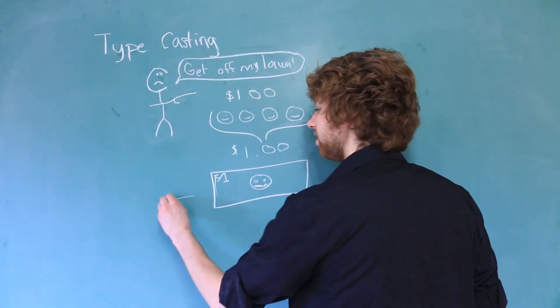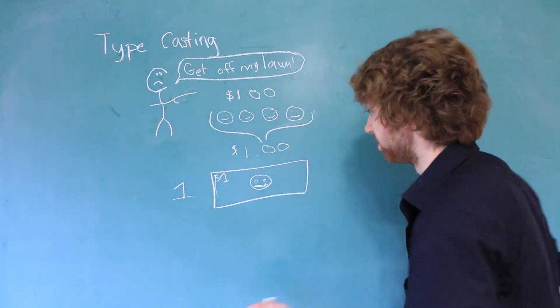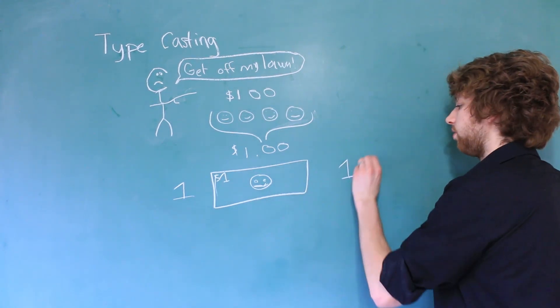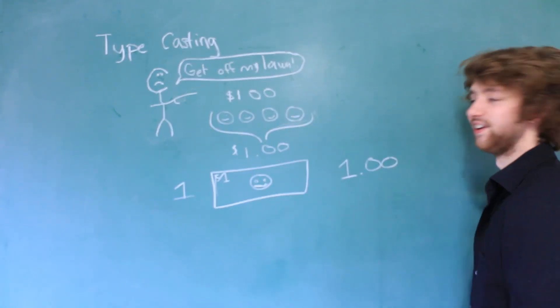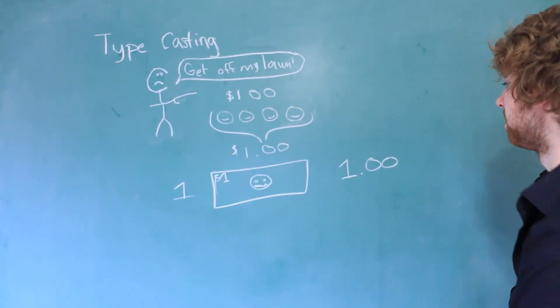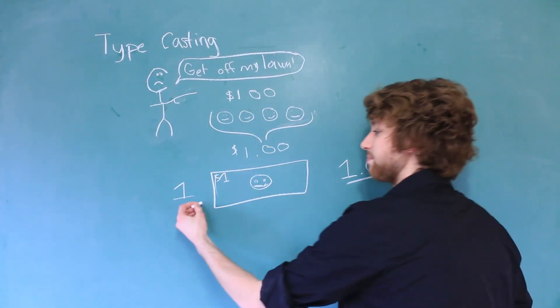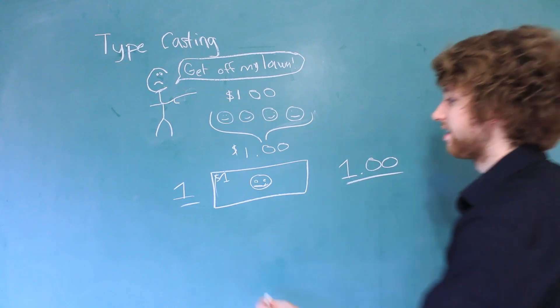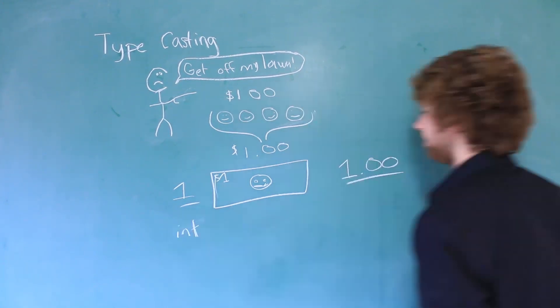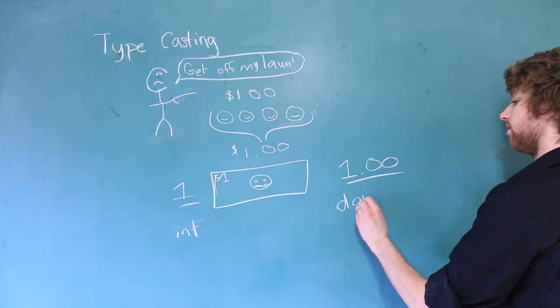Essentially he wanted one dollar, but you gave him one dollar and it seems like the same thing. But if you think about it these data types behind these numbers are different. This is considered an integer and this over here is considered a double.